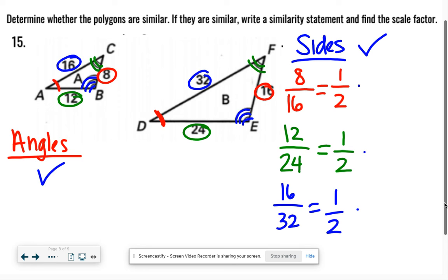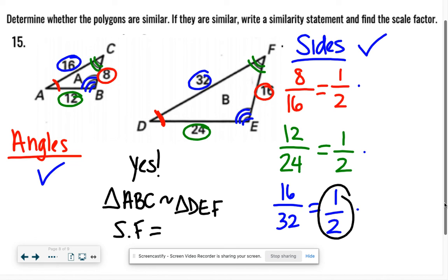So we can say yes, they are similar. Now we can write a similarity statement, which is just triangle ABC is similar to triangle - now what matched A? That was D. What matched B? That was E. And C matched F. So triangle DEF. And then our scale factor is just what we got when we reduced. So just a half. That's our scale factor. Good work, team.